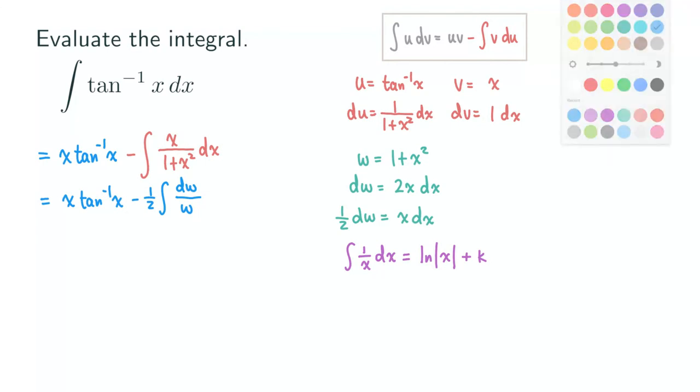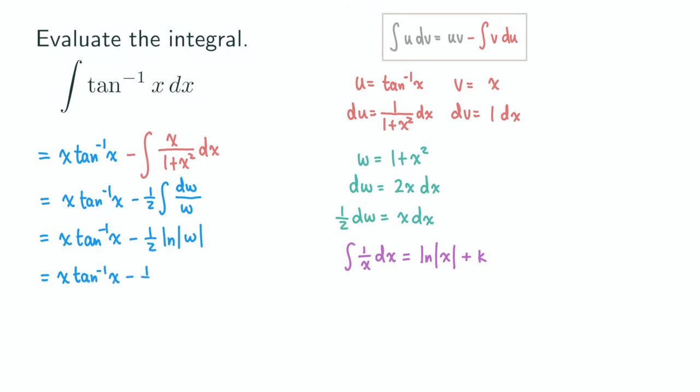Okay, so we can actually just put down our result here. So we have x and then times tangent inverse of x. And then minus 1 half times what, ln natural log of w, absolute value, the w. And we actually need to replace the w by 1 plus x squared, right? So I'm going to substitute the 1 plus x squared back in here, which will give me x and then tangent inverse of x minus 1 half, natural log of 1 plus x squared, and then plus c.